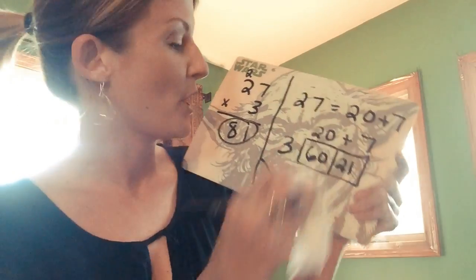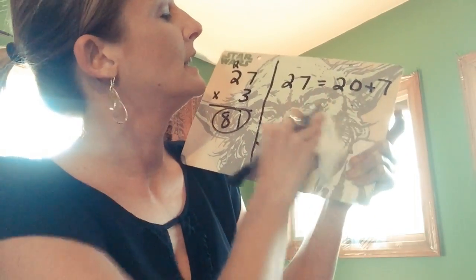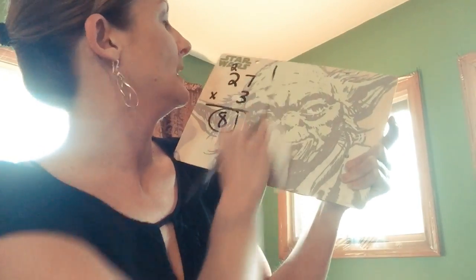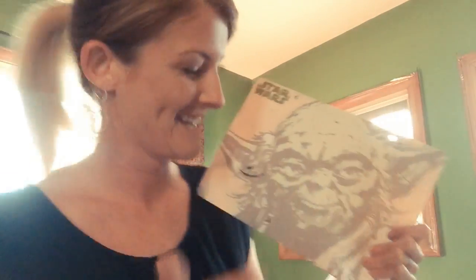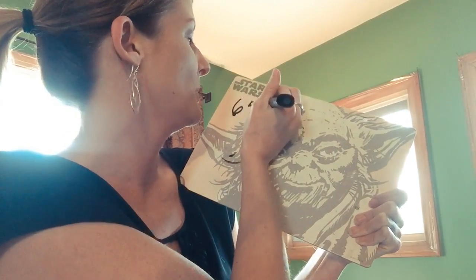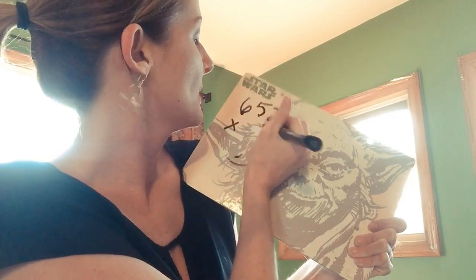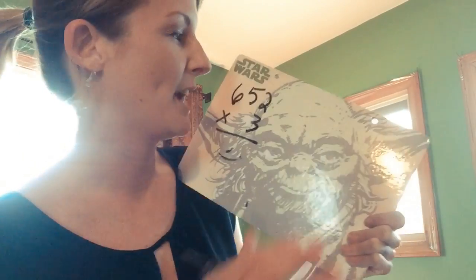Now I want to show you that we can also do this with 3 digits. I'll be fast because I know we've got to get to homework. So here we go — we're going to solve 652 multiplied by 3 using the box method.